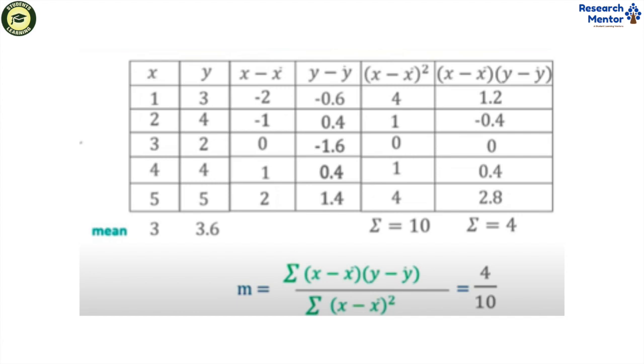And the next column, y minus ȳ: the first value is minus 0.6, the second value is 0.4, the third value is minus 1.6, next is 0.4, and last is 1.4. Next column, (x minus x̄)(y minus ȳ): the first value is 1.2, second is minus 0.4, third is 0, fourth is 0.4, last is 2.8.